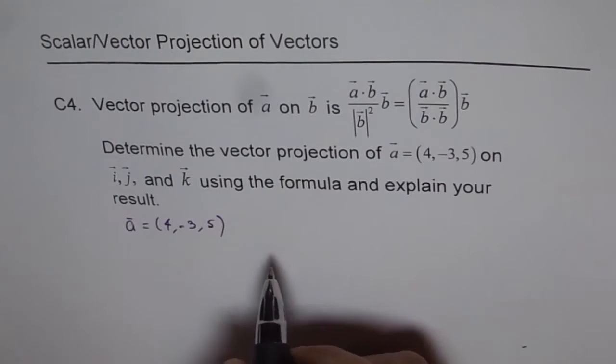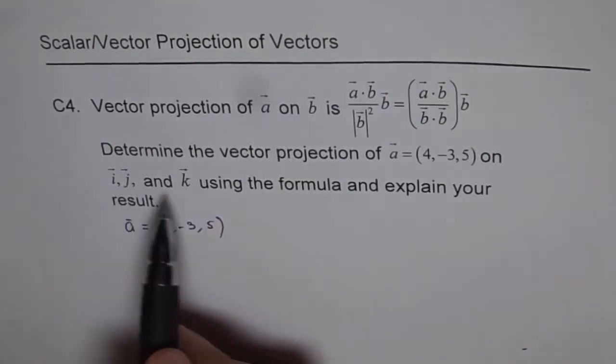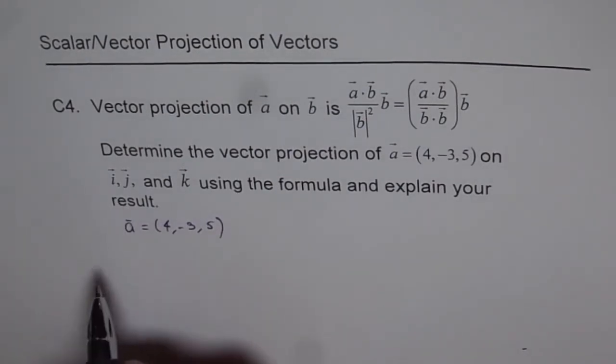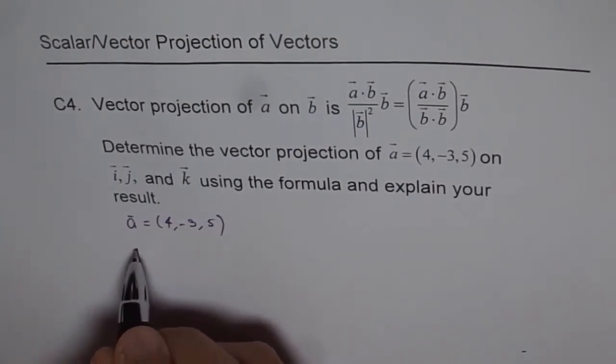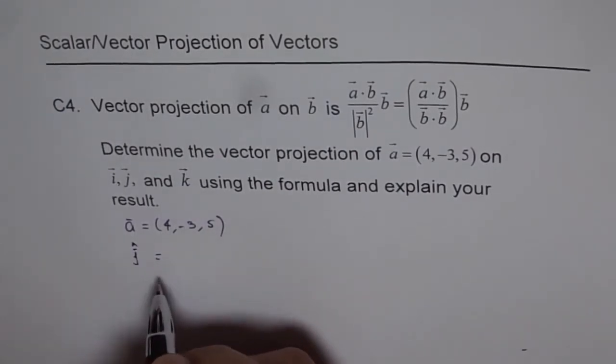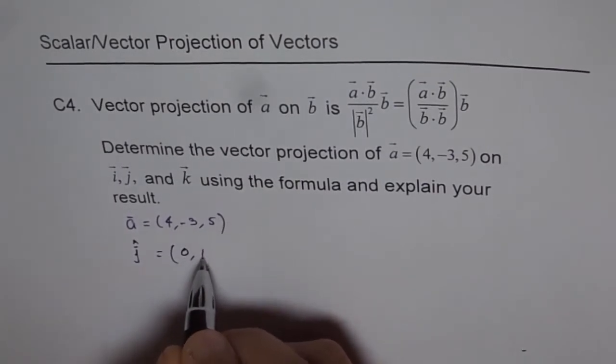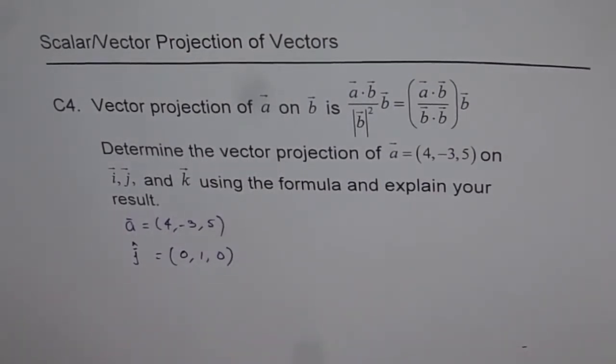Let me just do projection of vector A on j and I'll leave i and k for you. So, let me do projection on j. In that case, what is vector j? Vector j is a unit vector in Y direction, so I can write this as (0, 1, 0). That is my unit vector.